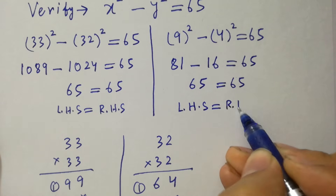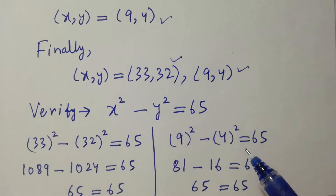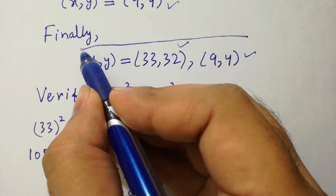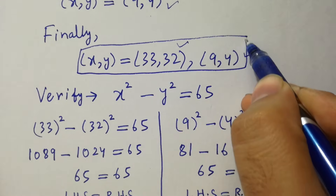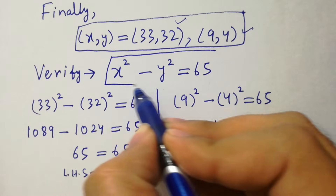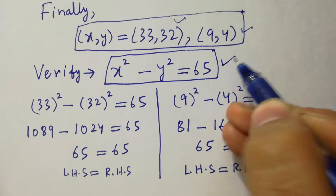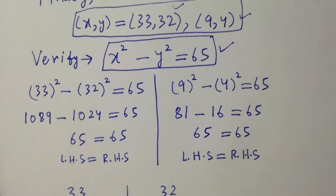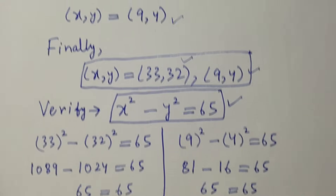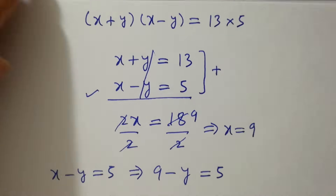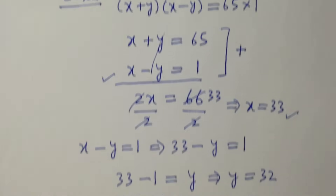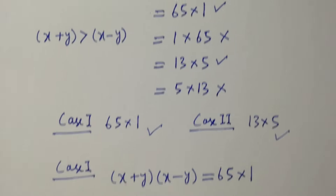This shows that the values of x and y — 33 and 32, and 9 and 4 — satisfy the equation x squared minus y squared equals 65. Thanks for watching this video. Please subscribe to this channel to get notifications of my new videos, and don't forget to share these videos with your classmates and friends so that they also benefit from it.